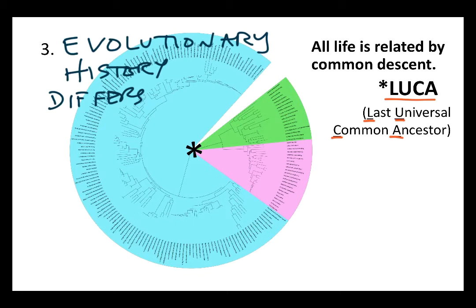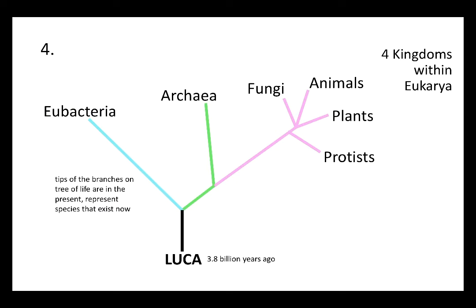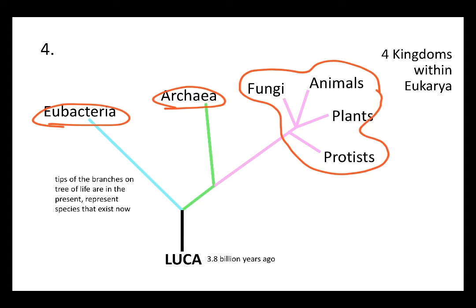There are three broad branches off the trunk of life, which for lack of a better word we call LUCA. Those are the Eubacteria, which are shown in light blue, the Archaea, which are shown in green, and then Eukarya, which is shown here. Prokaryotes are the Eubacteria and the Archaea, and eukaryotes fall within one of the three domains of life called Eukarya. This again goes back to the idea that we have differing evolutionary histories.